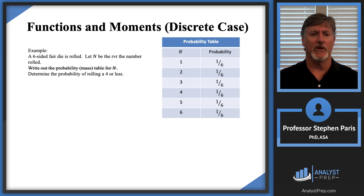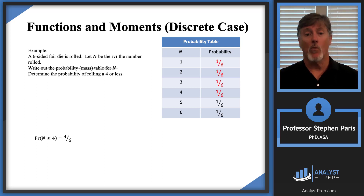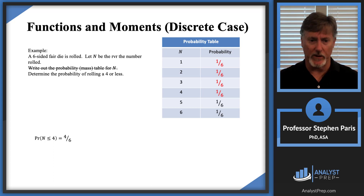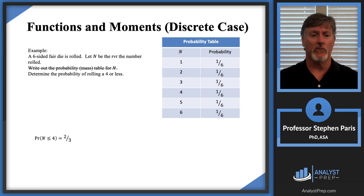Let's change the problem and look at the probability of rolling a four or less. A four or less means cap N equals one, two, three, or four. I've highlighted those probabilities in red. The probability that cap N is less than or equal to four — summing those red values — gives four-sixths, which reduces to two-thirds.